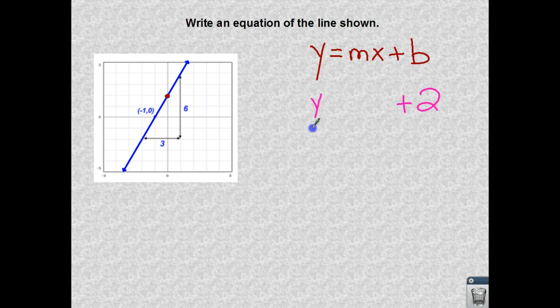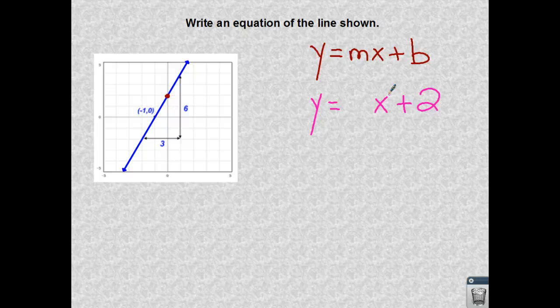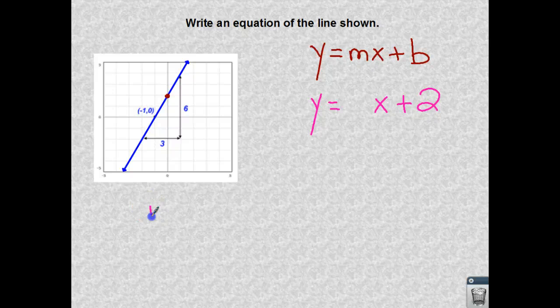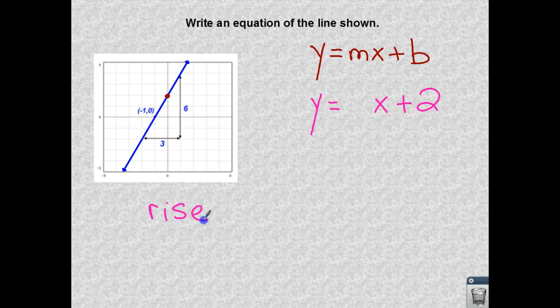And I know that my y and my x are all of the coordinates that are going to make up this line. So now I just need to find out my slope. And if you remember, we had that fraction called the rise over the run. So we have the change in the y-axis over the change in the x-axis.